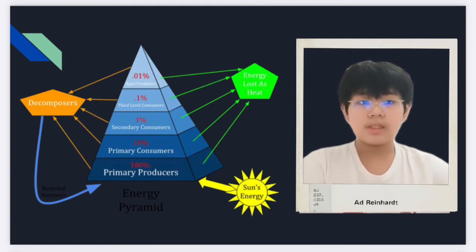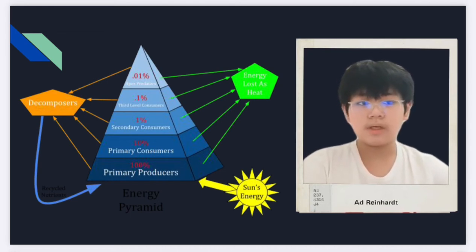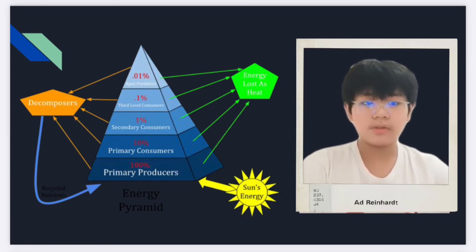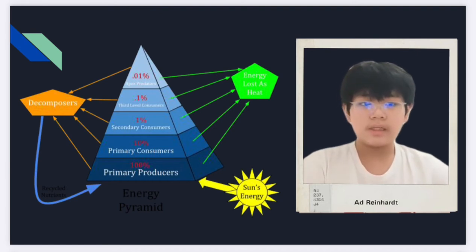As energy flows through the various trophic levels, some energy is normally dissipated as heat at each level. About 10% of the total energy is transferred during the energy flow through the trophic levels, and hence the steady drop in the amount of energy.